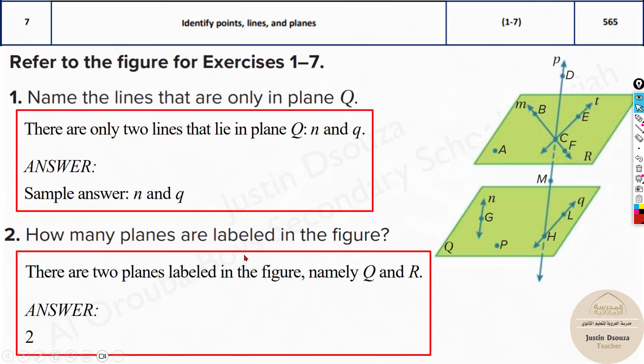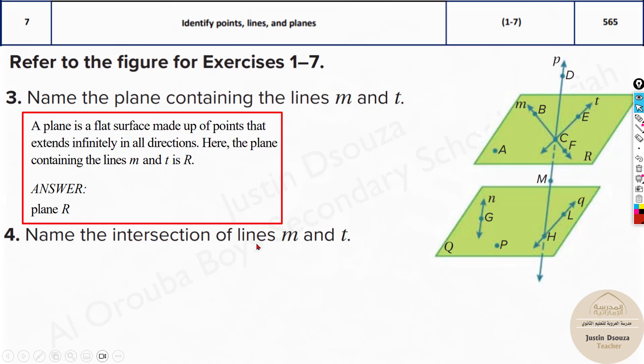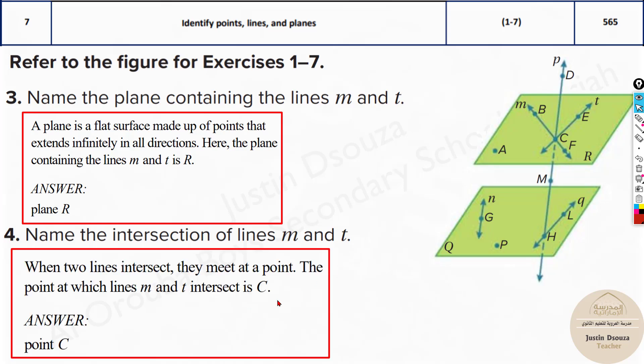There are two planes over here and name the plane containing the lines M and T. Here you can see this is M and this is T. The plane is plane R over here and name the intersection of lines M and T. Where do these two lines intersect? At the point C. That is the answer and these two are in plane R.